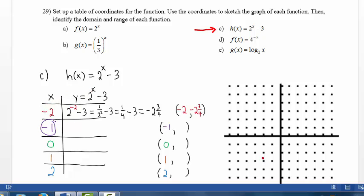When x equals negative 1, y is 2 raised to the negative 1 minus 3. That's 1 divided by 2 to the first minus 3. 1 half minus 3 is negative 2 and a half.